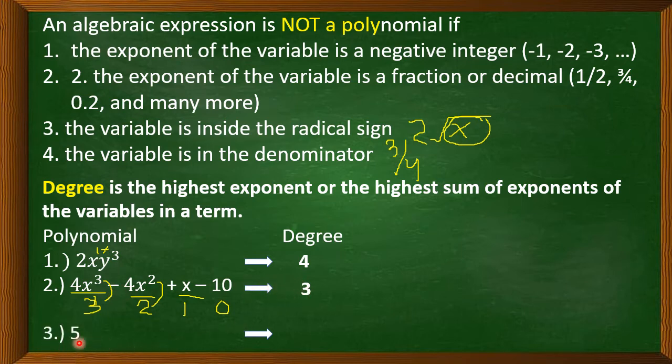And last, example number 3: the constant 5. The degree of a constant is always 0.